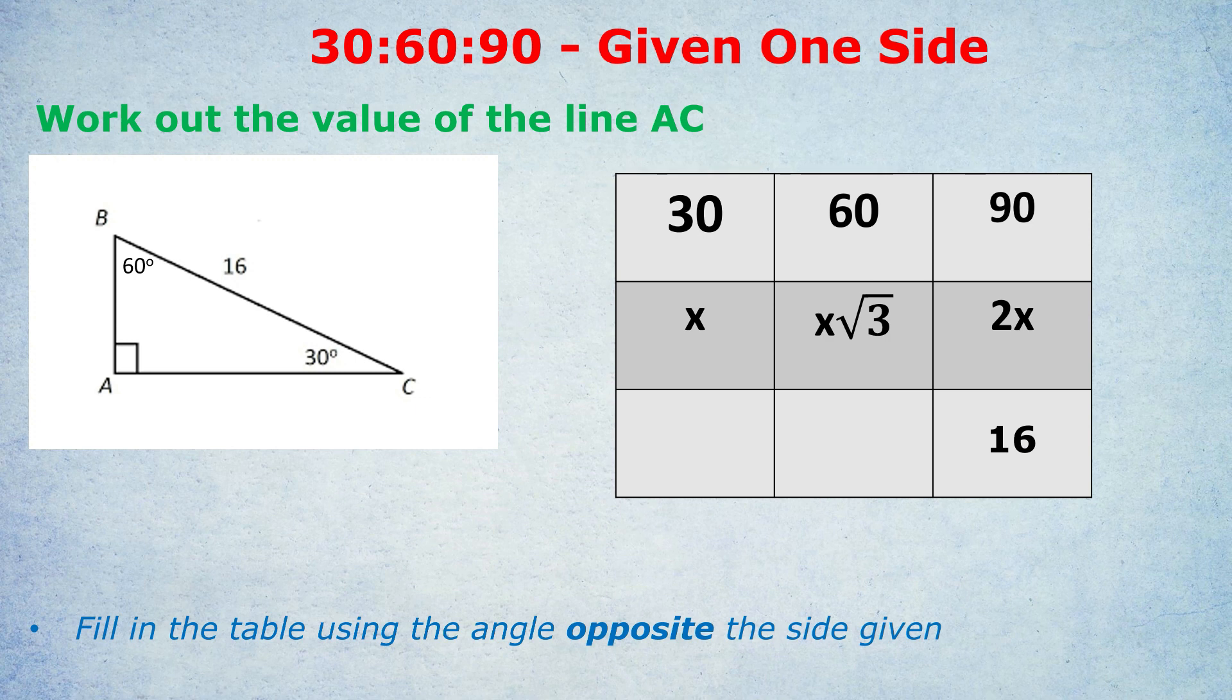Now here's the beauty of the box. We can then make an equation. We know 2x equals 16. So we can write out that 16 = 2x. Solving that, x must be 8. This is how the box works. You fill in the box, solve the equation, and then fill in the rest of the box.